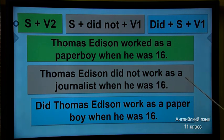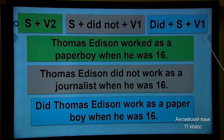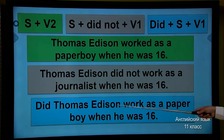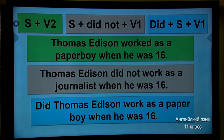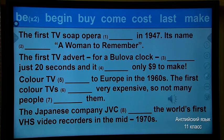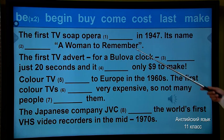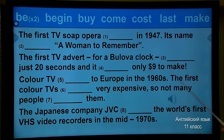And then the interrogative sentence structure: did plus subject plus verb 1. Again, we don't use verb 2 here because we use 'did'. For example: Did Thomas Edison work as a paper boy when he was 16? So, dears, it is time to practice. I have an exercise — your task is to fill in the gaps by using the words in the box.